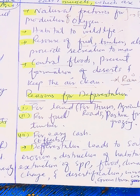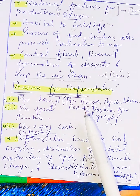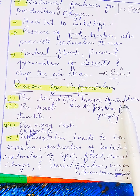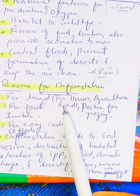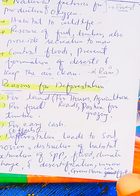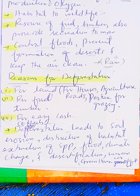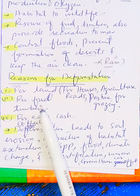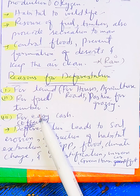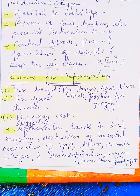The reasons for deforestation include conversion of land for agriculture, construction of roads, and pasture grazing. Other causes include clearing forest for fuel and timber, and for easy cash — meaning timber is sold for profit.